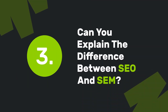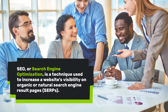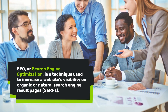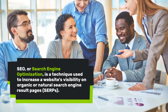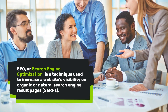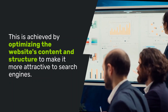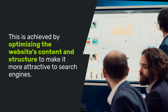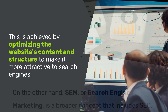Can you explain the difference between SEO and SEM? SEO, or search engine optimization, is a technique used to increase a website's visibility on organic or natural search engine result pages, SERPs. This is achieved by optimizing the website's content and structure to make it more attractive to search engines.